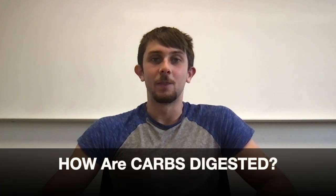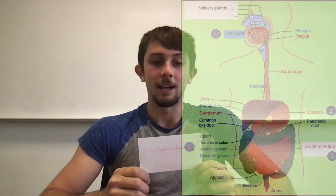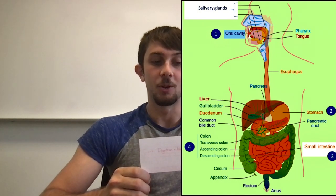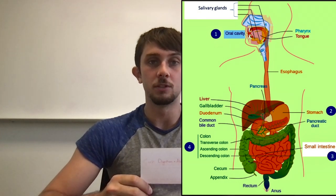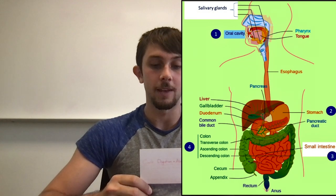Now that we covered Carbs 101, it's time to go into carb digestion and absorption. The three macros are digested and absorbed in different ways. Here is how carbs are broken down. The first entry point is the mouth, where salivary amylase and the teeth break it down. Next is the stomach, where the gastric juices dissolve it. Third is the small intestine, where the carbs are broken down into monosaccharides — this is where the most nutrients are absorbed. Finally, the monosaccharides enter through the hepatic portal vein, where they are transported to the liver and other cells for use.